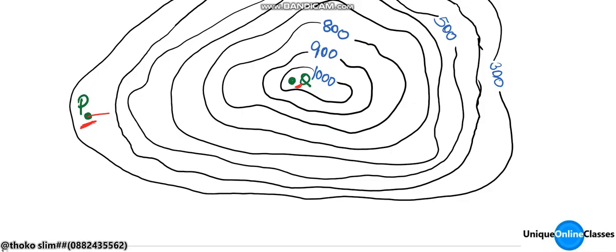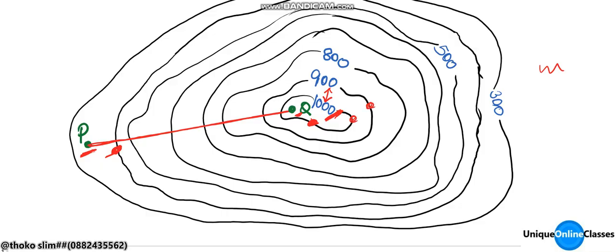If you join point P and point Q, you can see that we cross several contour lines. The value of the contours crossed are 1000, 900, 800, 700, 600, and 500. The vertical interval is the difference between two successive contours, which is 100 meters.